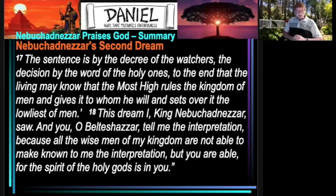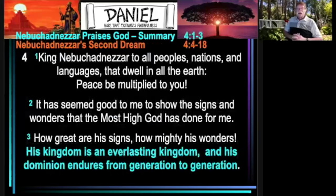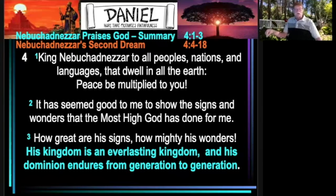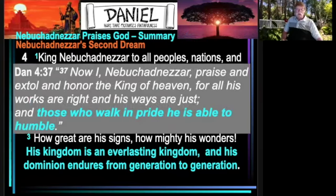This is the passage we're looking at, verses 1 through 18 in chapter 4. In our passage we have two sections: Nebuchadnezzar praises God in the summary, verses 1 through 3, and the second dream, verses 4 through 18. The first few verses can really be seen as the end result of the story, not the beginning. It's kind of like a flashback. The content of chapter 4 really begins with the last verse, verse 37: 'Now I, Nebuchadnezzar, praise and extol and honor the king of heaven, for all his works are right and his ways are just. And those who walk in pride, he is able to humble.' That's really the end of the summary.